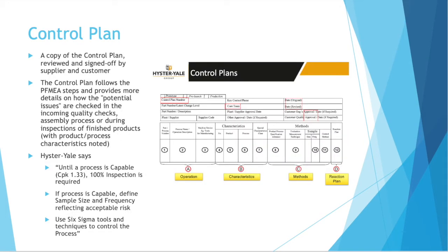The PPAP should include a copy of the control plan, reviewed and signed off on by the supplier and customer. A control plan follows the P-FMEA steps and provides more details on how potential issues are checked in the incoming quality checks, assembly process, or during inspections of finished products. Until a process is capable — a CPK of 1.33 — 100% inspection is required. If a process is capable, define a sample size and frequency that reflect an acceptable risk, and use Six Sigma tools and techniques to control the process.